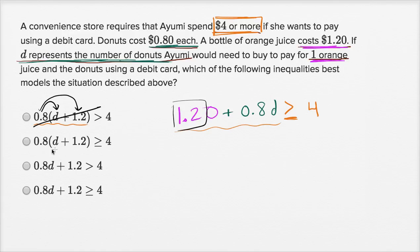0.8 times D plus 1.2 is greater than or equal to four. Well, let's see, that has the greater than or equal to, but if you distribute 0.8D, 0.8 times D is going to be this, but 0.8 times 1.2 is not 1.2. It's going to be 0.96, so that's not going to work out.